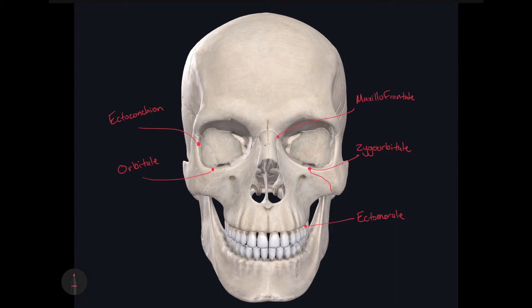If I can get you to focus your attention on the zygomatic arch, the point where it is most lateral is called the zygion. Turning back to the zygomatic bone, if we go to the zygomaxillary suture, the most inferior point of this suture — right here — that's going to be called the zygomaxillare.